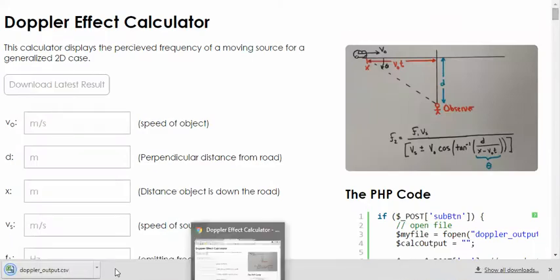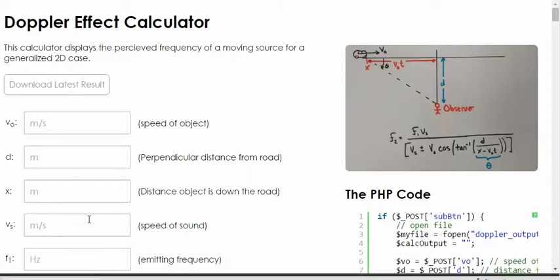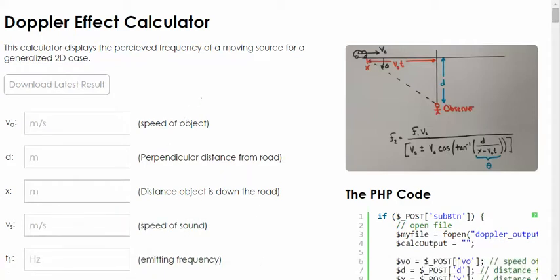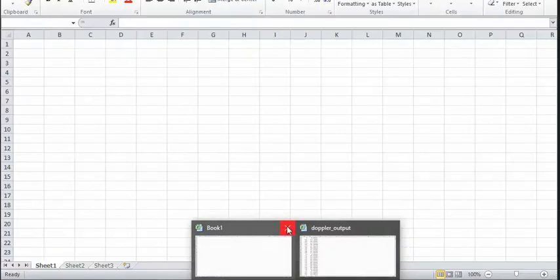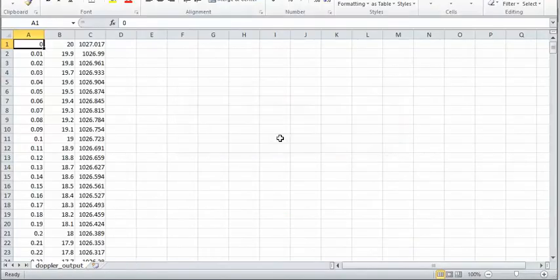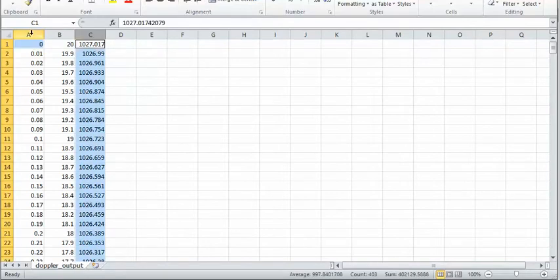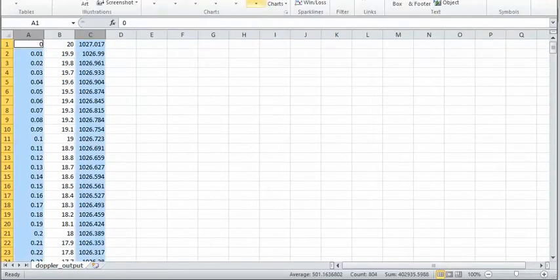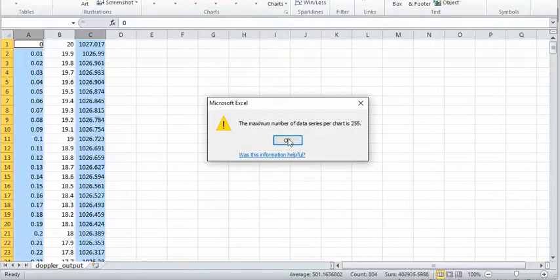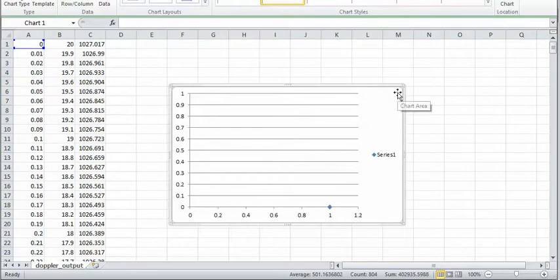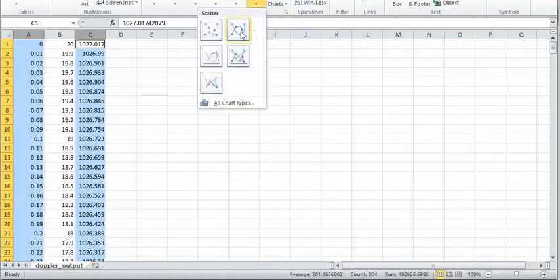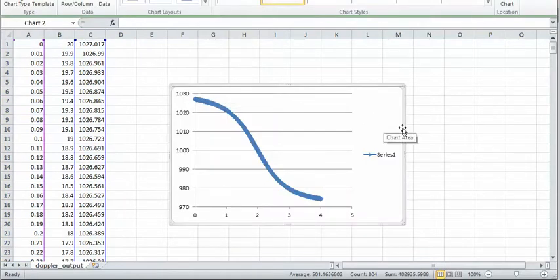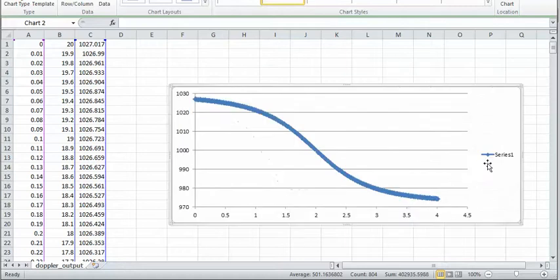We can download the results and then we can open these results. Here are our results and we can just go insert scatterplot. I don't know why it says that. Every once in a while I get this error where it says it can't do it. So there we go, that's what this would look like.